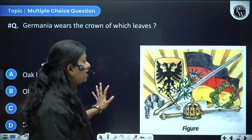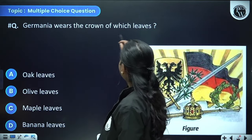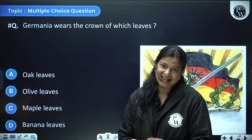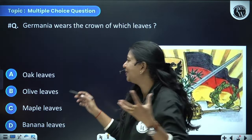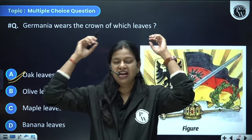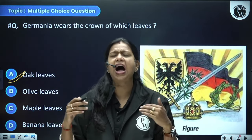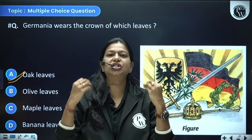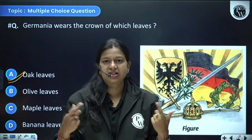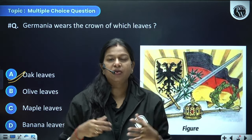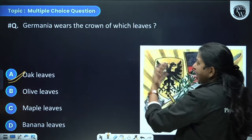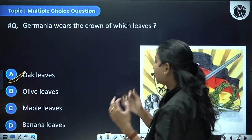Germania is the allegory for Germany. The question asks: where is the crown made of which leaves — oak, olive, maple, or banana? Germania wears a crown made of oak leaves. The oak crown was seen as the symbol of the highest respect. When the Olympics started in Greece, winners were awarded crowns of oak leaves, which was the highest honor one could give.